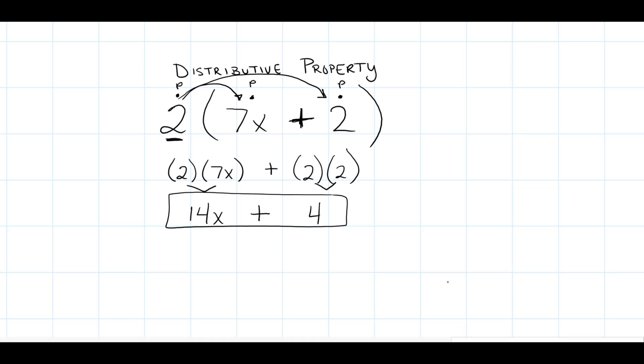The commutative property allows us to rearrange terms when we have addition or multiplication. Since we have addition here, I can rearrange this the other way—it could look like 4 plus 14x.